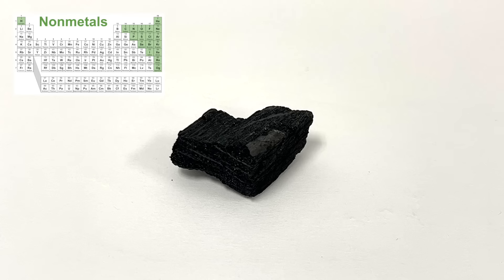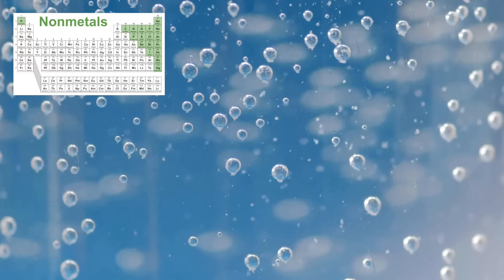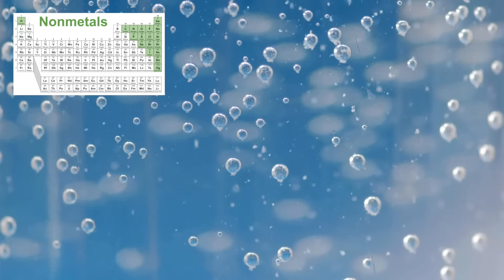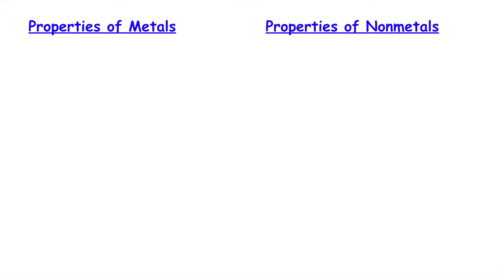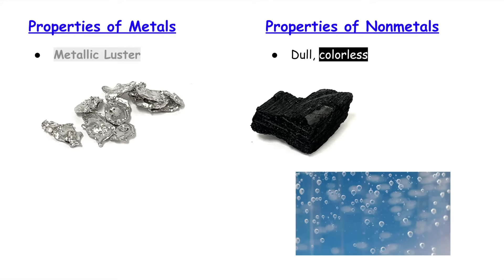If we look at some of the non-metals, like carbon here, it has a very dull color to it, so there isn't much light shining off it. Or if we look at sulfur, you can see it's very colorful. And then there are a bunch of gases, like oxygen, that are completely colorless. To summarize, metals are very shiny and have a metallic luster to them, whereas non-metals are dull, colorless, or colorful.